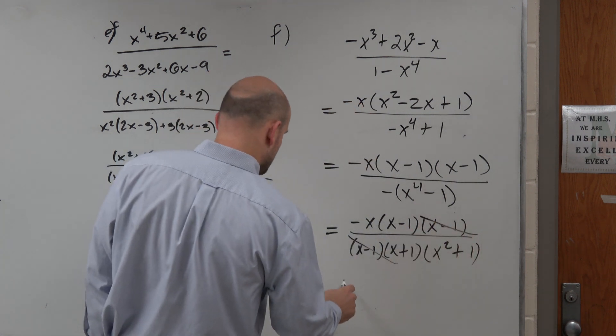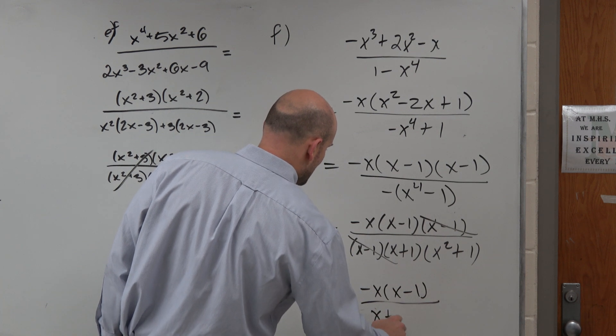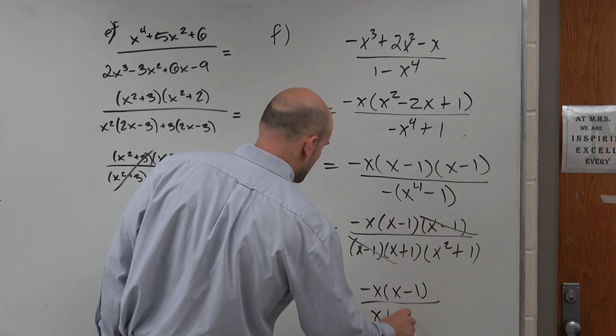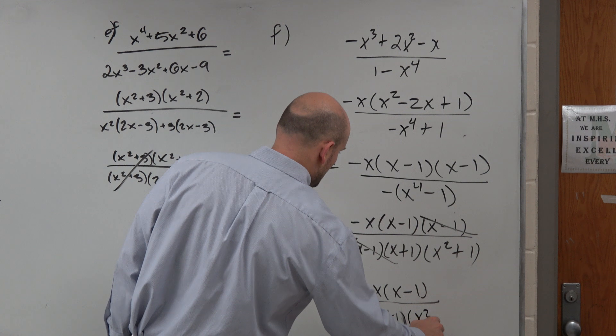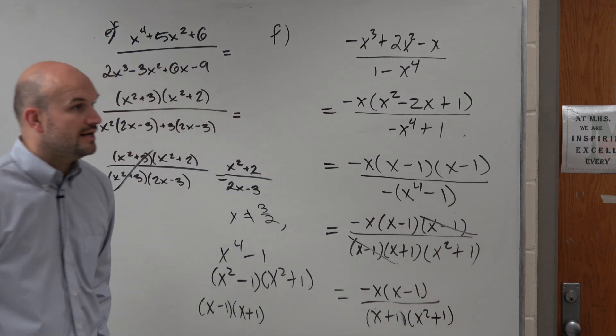And therefore, you guys can see my final answer here is -x times (x - 1) all over (x + 1) times (x² + 1), where x cannot equal -1 and 1. Right? Yes?